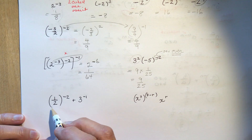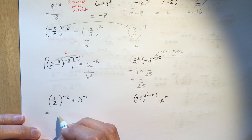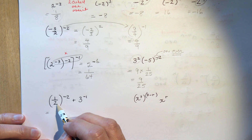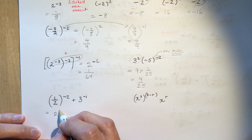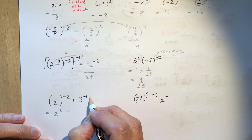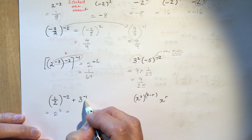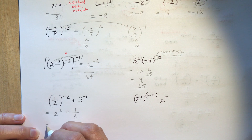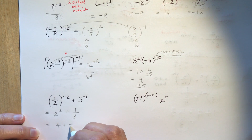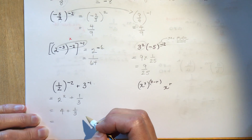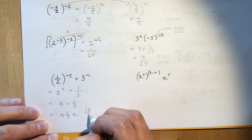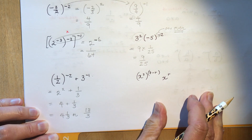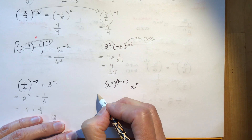One half to the minus two: flipping the fraction to remove the negative exponent gives two squared, which is four. Plus three to the negative one: three to the power of one is three, the negative means one over it, so one third. So I have four plus one third, which is four and one third, or thirteen thirds.